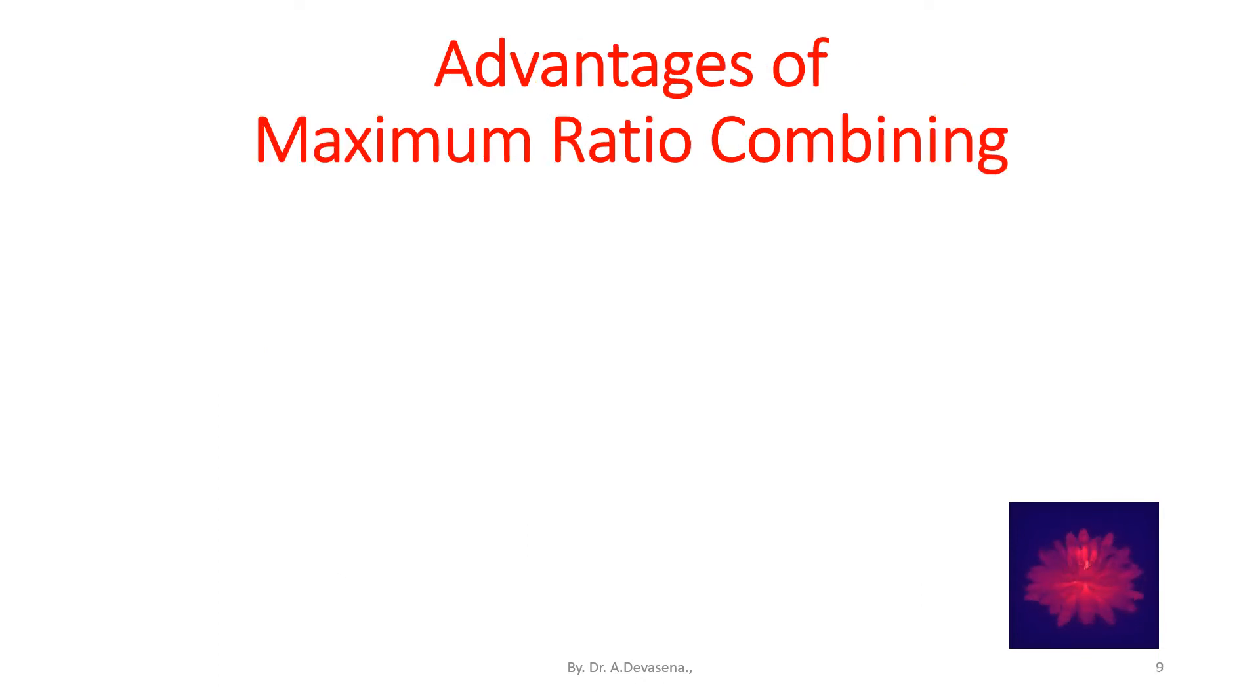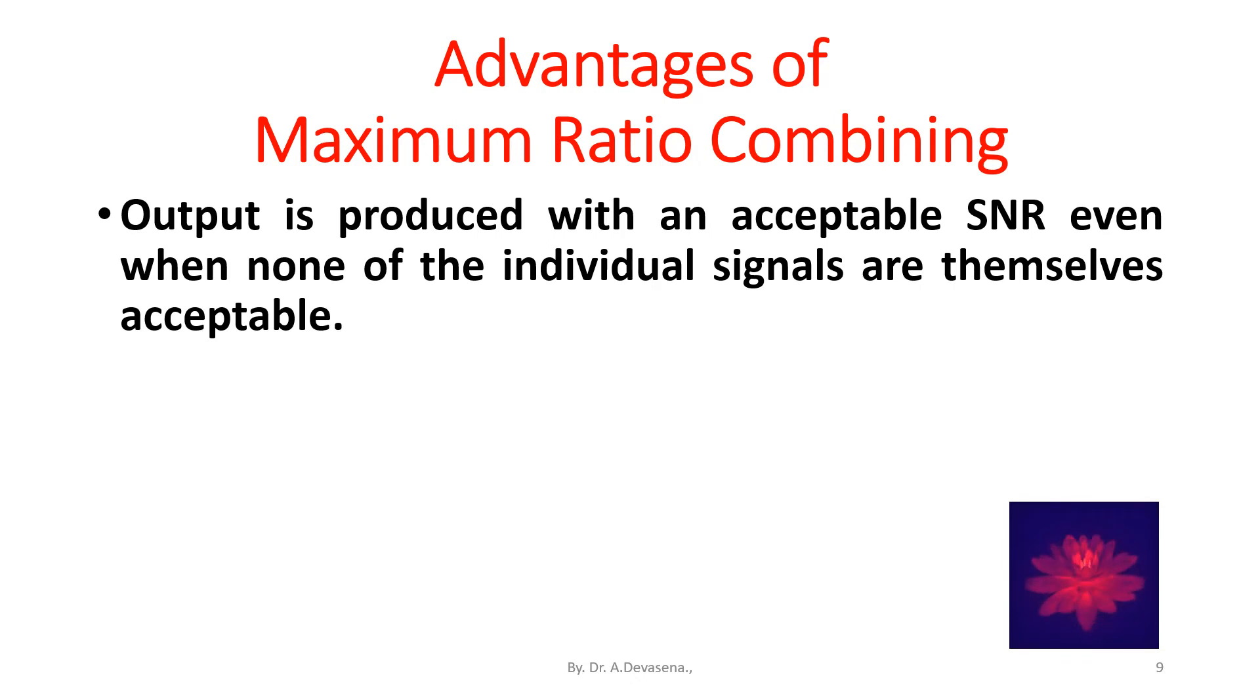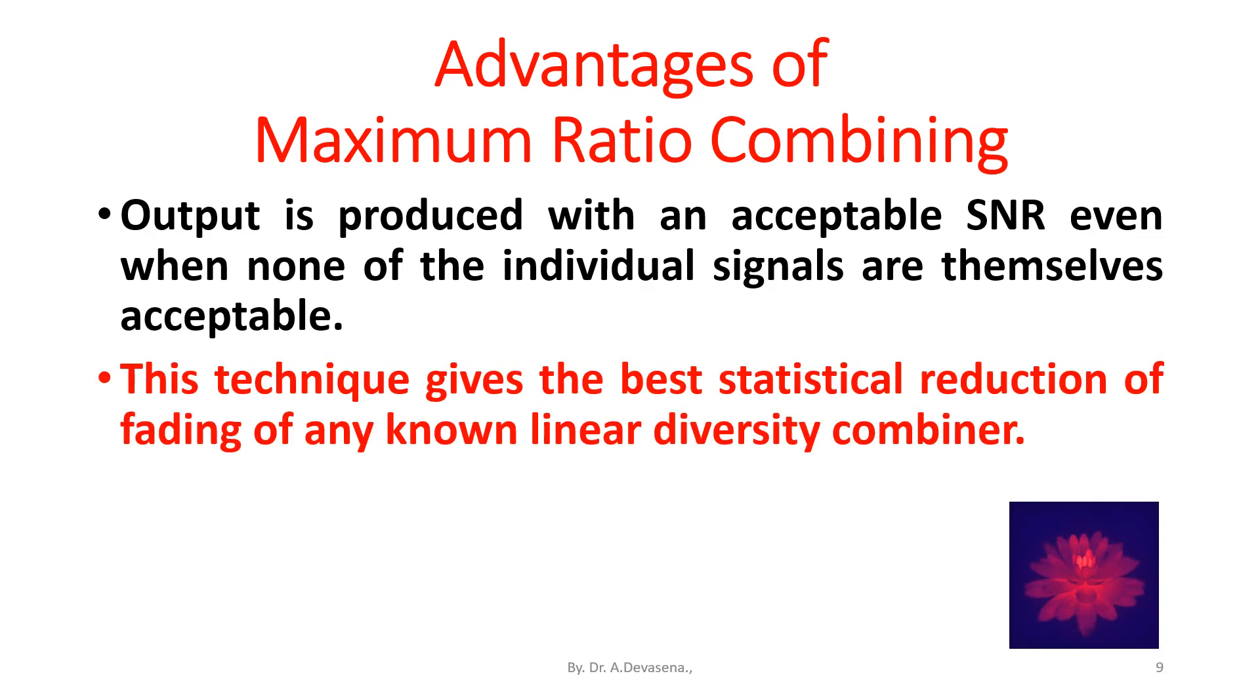Advantages of maximum ratio combining method. Output is produced with an acceptable SNR even when none of the individual signals are themselves acceptable. This technique gives the best statistical reduction of fading of any known linear diversity combiner. Accuracy is high.